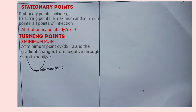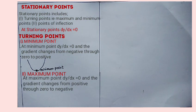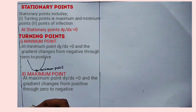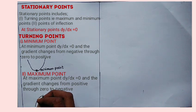The second part we are going to look at is the maximum point. At the maximum point, dy over dx is still equal to 0, but the gradient changes from positive through 0 to negative. The example of the curve looks like this — this is your maximum point.